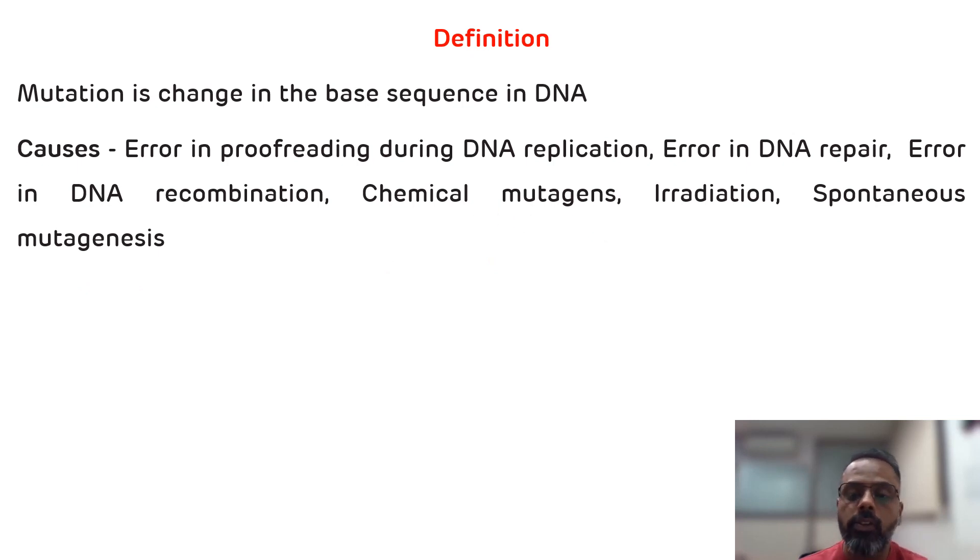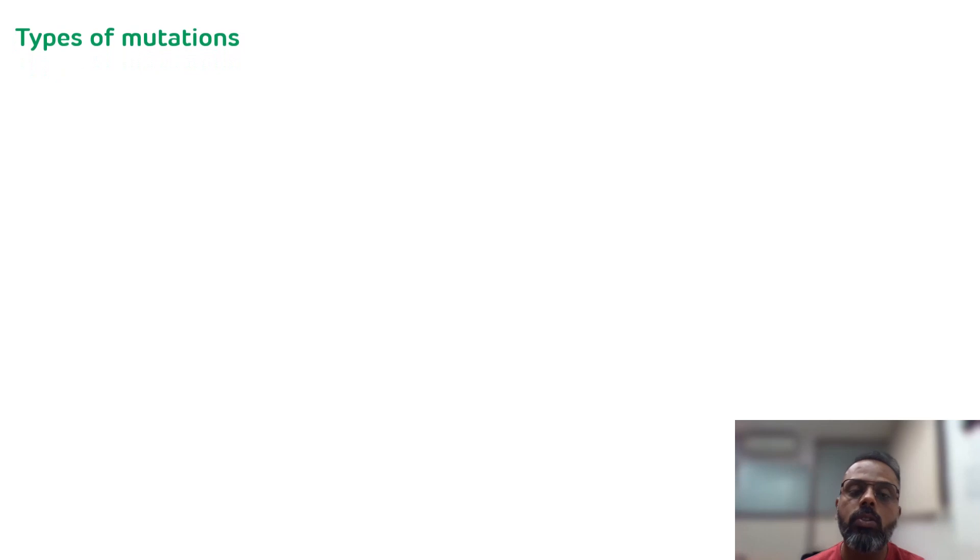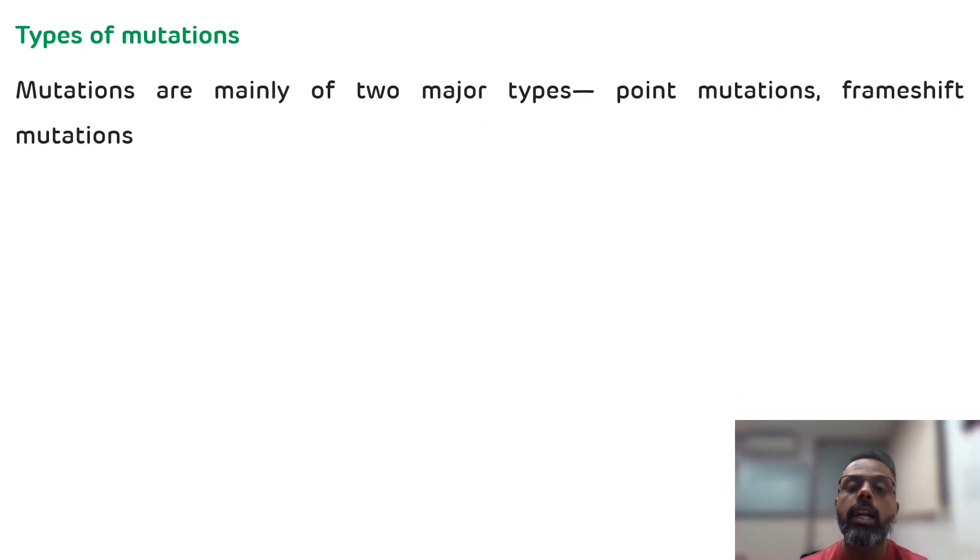So those are the causes. Now we will see what are the types of mutations. There are mainly two types of mutations. One is the point mutation and another is the frameshift mutation. Now in the point mutation, it is divided into two categories.